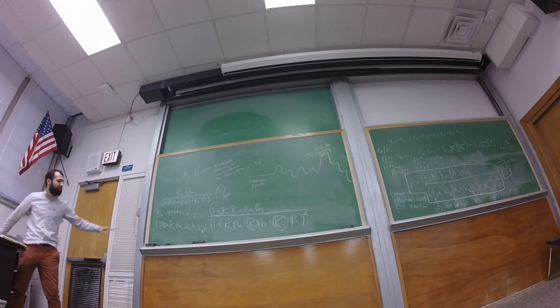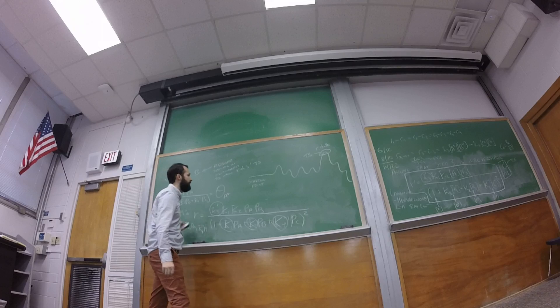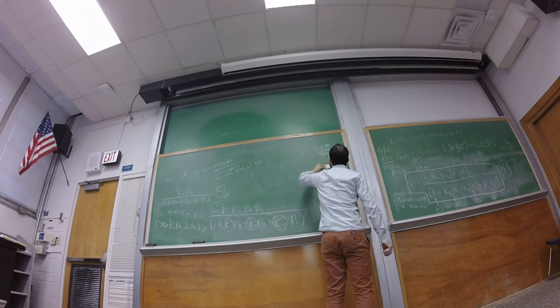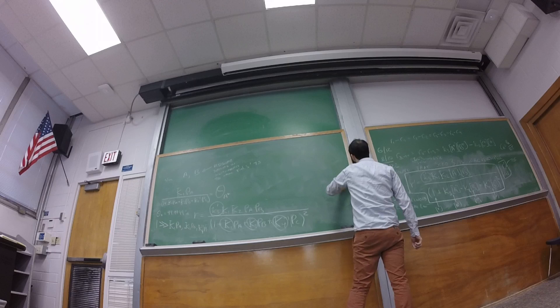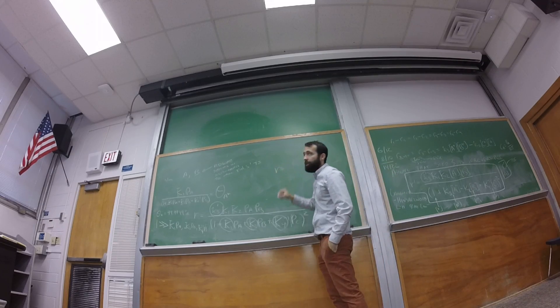The equilibrium constant for C absorption times the pressure of C. So if this term dominates, what happens to my rate equation? How does it simplify itself? If the one is the dominant species in the denominator, then what happens to the rate equation?